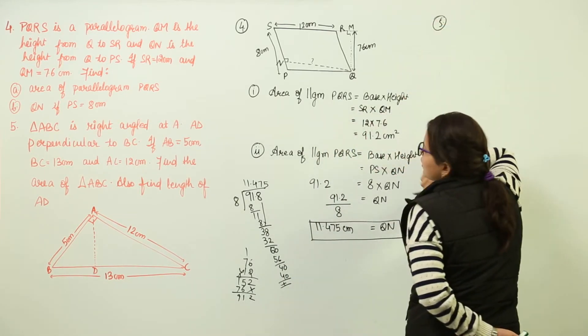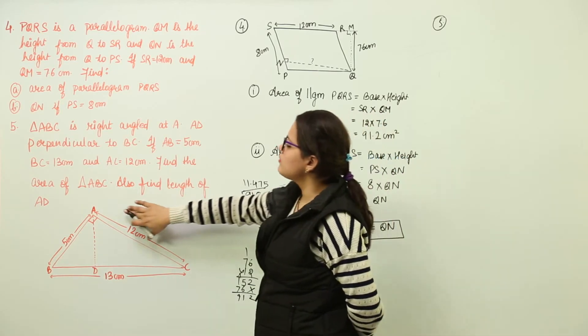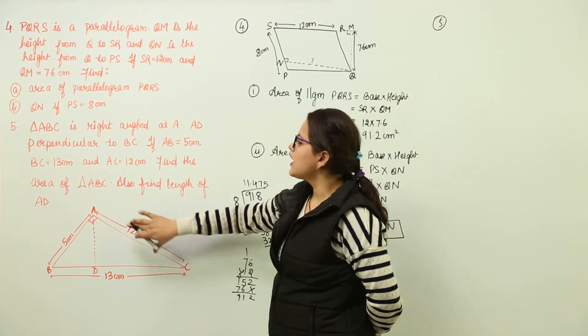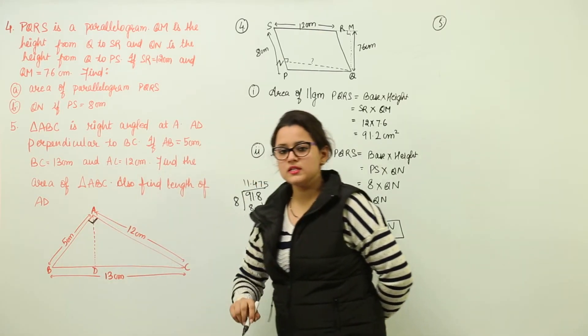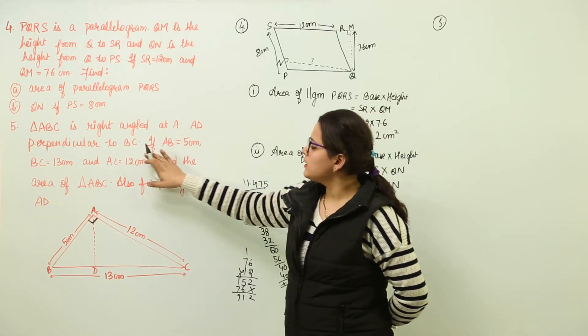That is question number 5. Question number 5 is saying you have a triangle ABC right angled at A. Means this angle is given to us as 90 degrees. AD is perpendicular to BC.